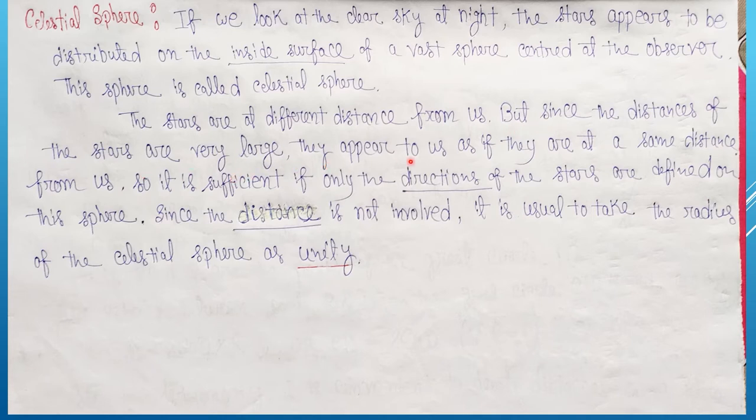The stars are at different distances from us, but since the distances of these stars are very large they appear to us as if they are at the same distance from us. So it is sufficient if only the direction of these stars are defined on this sphere.